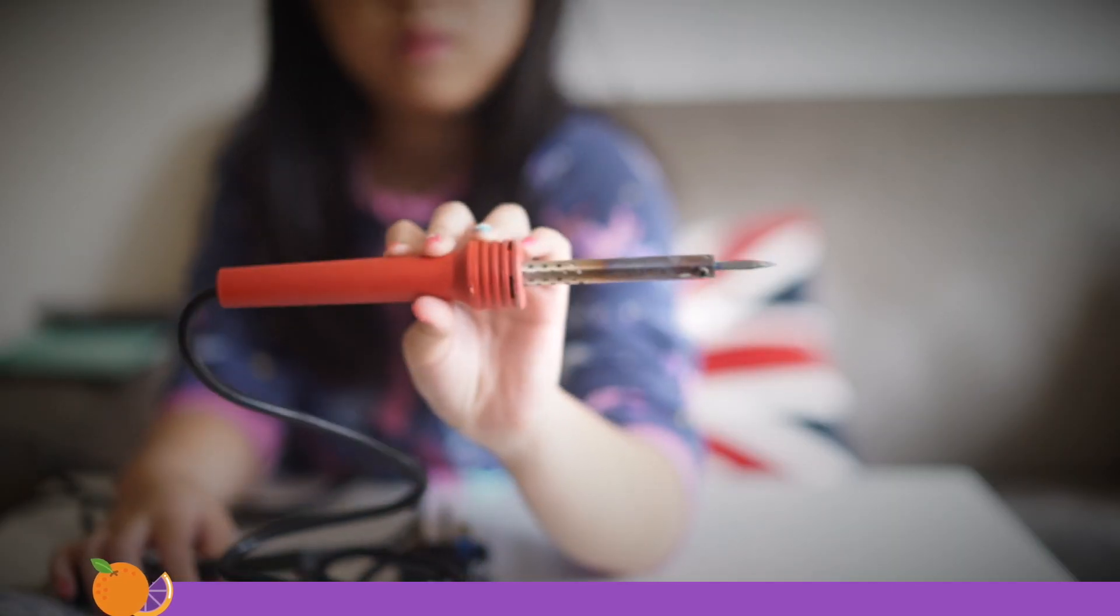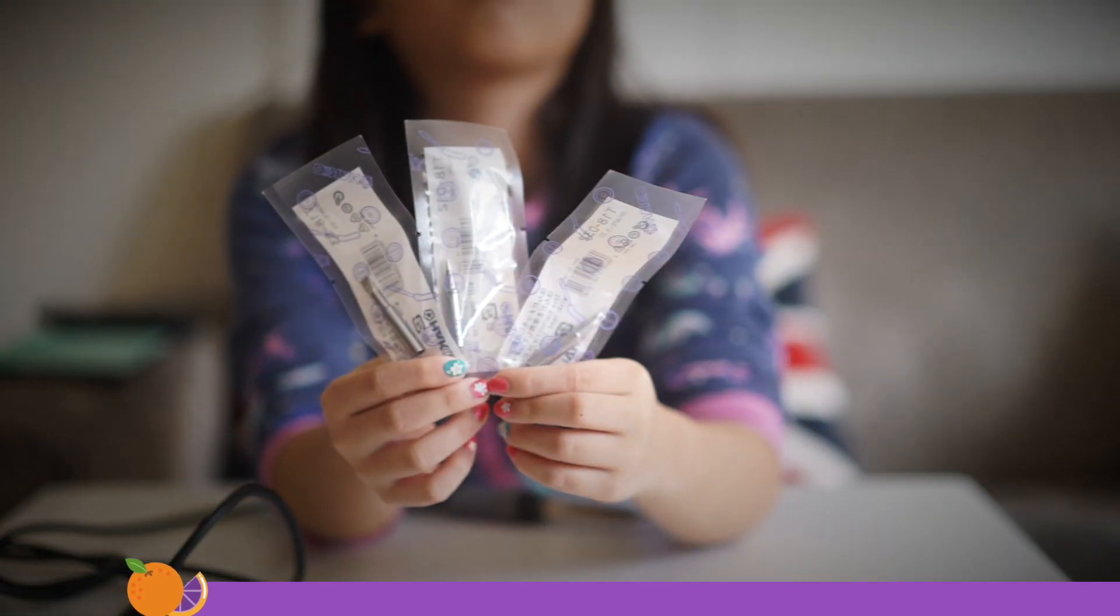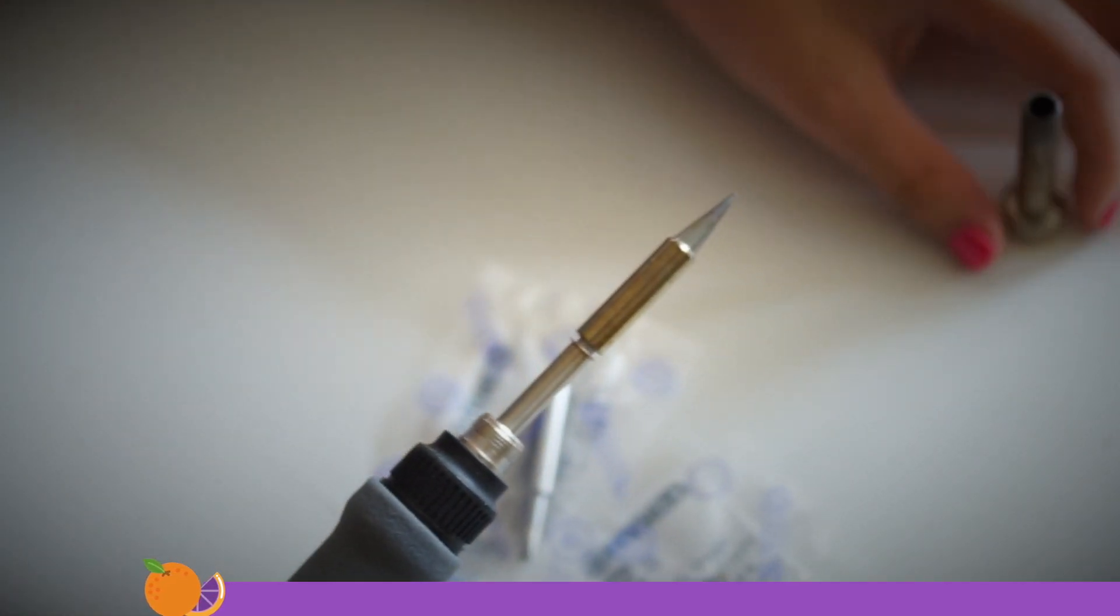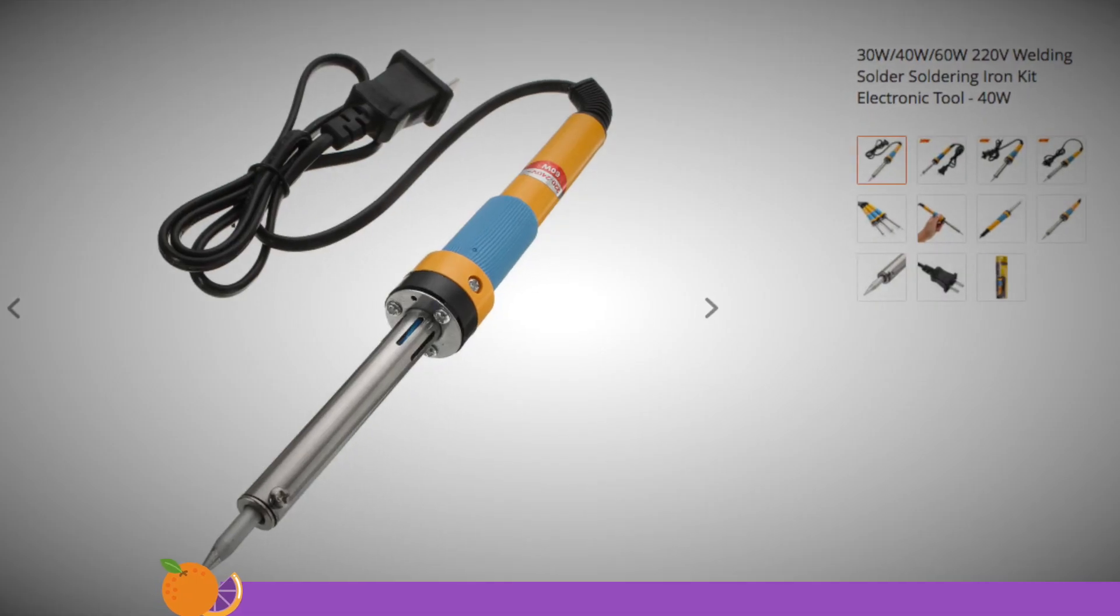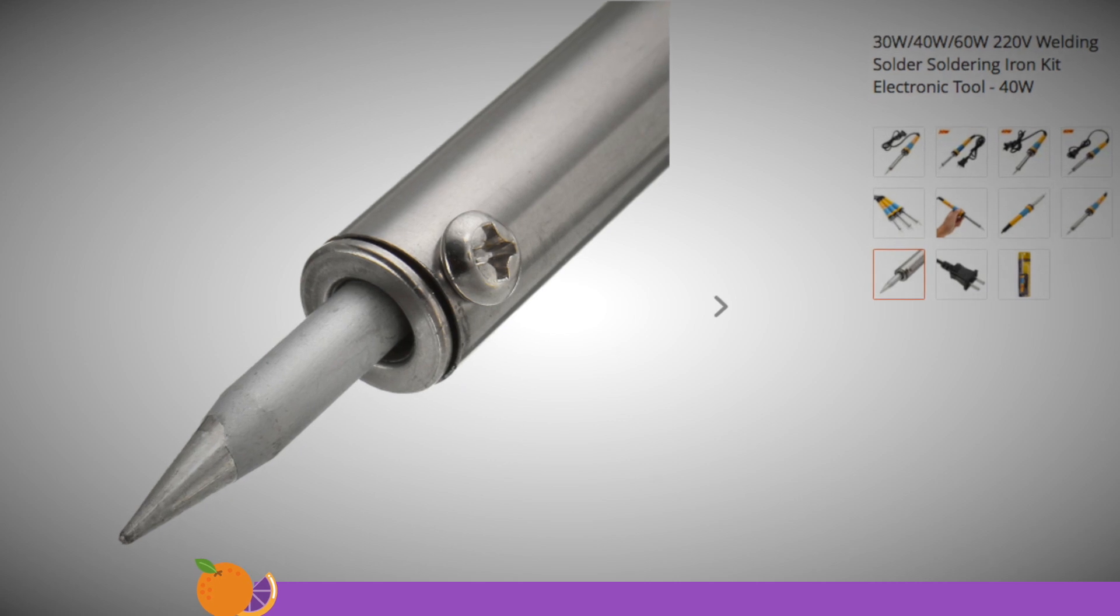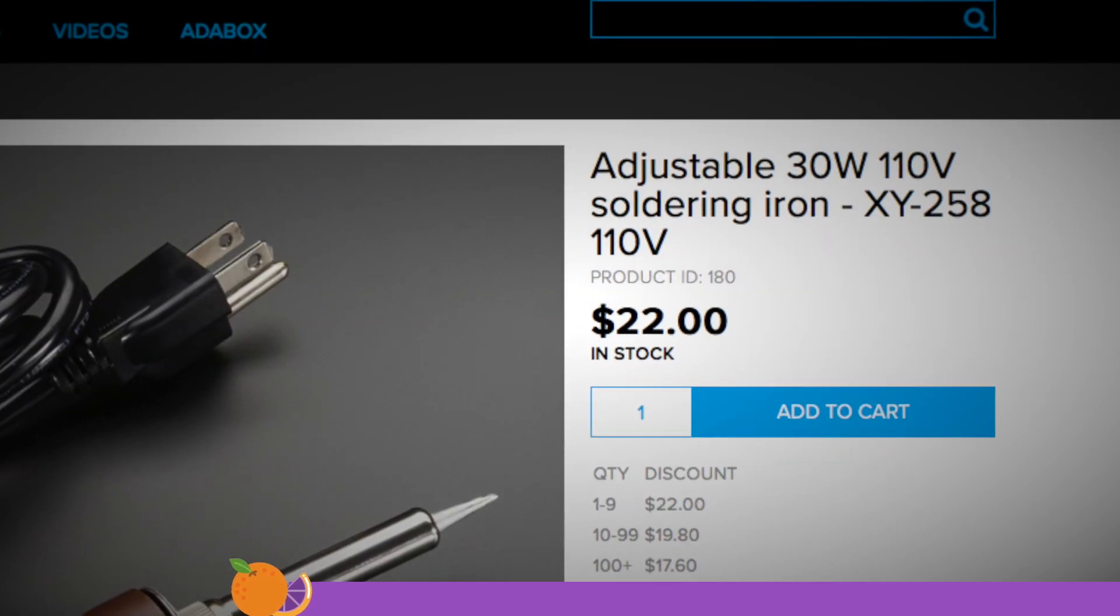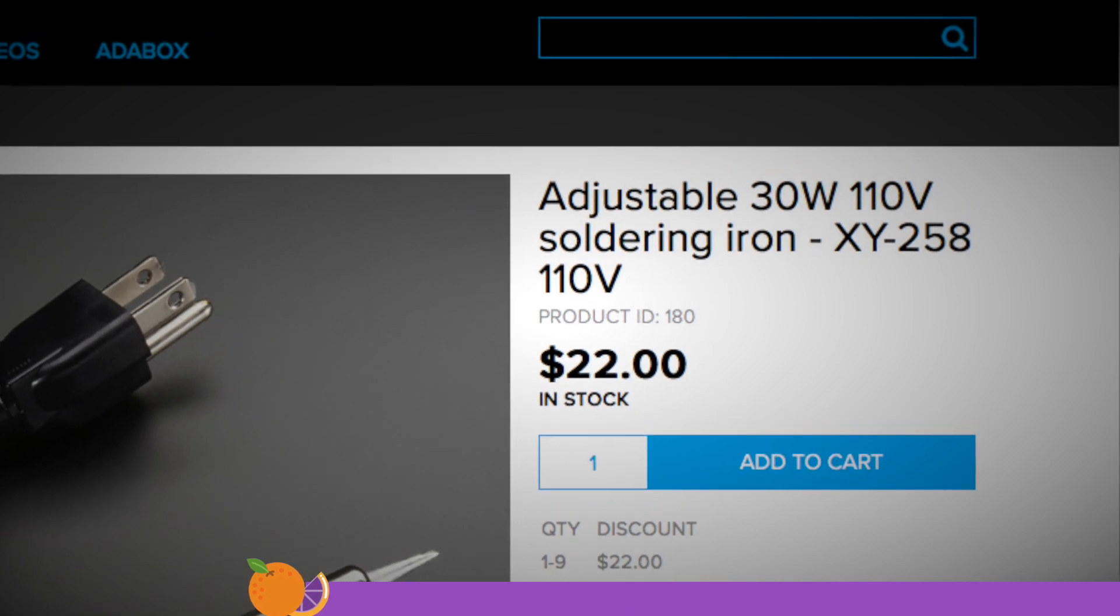Number one: A decent soldering iron. It doesn't have to be expensive, but should be reliable and heat up well. Some less expensive ones will not have changeable tips and will only have one power setting. But as long as you pick an iron with a power rate between 20 to 60 watts, it will be fine.